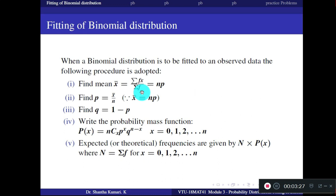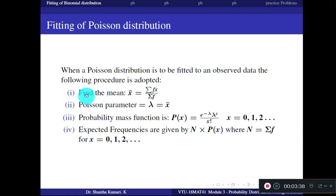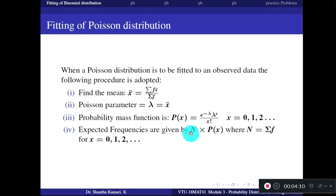If you are fitting a Poisson distribution, the first step is the same — find the mean using summation of f*x divided by summation of f. The parameter lambda is nothing but the mean value x-bar. Using this lambda, write the PDF: e^(-λ) * λ^x / x!. For each value of x, the expected or theoretical frequencies are given by N into P(x), where N is the summation of all frequencies.